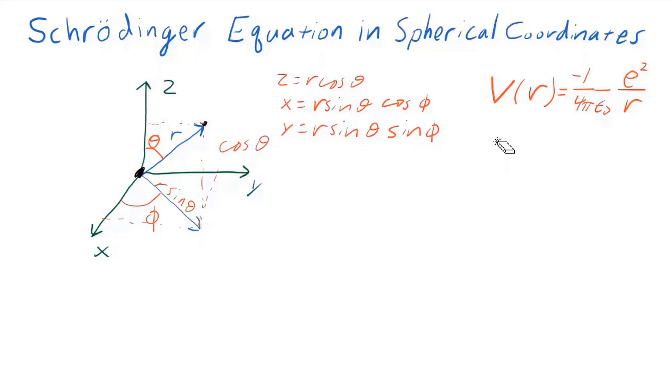I'll write out the Schrödinger equation in three dimensions. The time-dependent version is iℏ ∂ψ/∂t equals -ℏ²/2m times the Laplacian of the wave function plus the potential energy times the wave function. It's very important to keep in mind that this potential energy function, V(R), depends only on R.